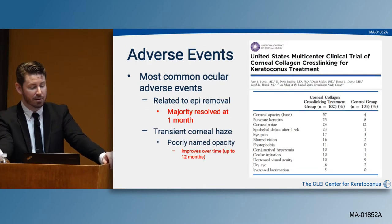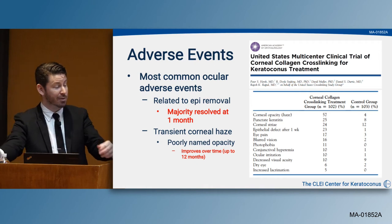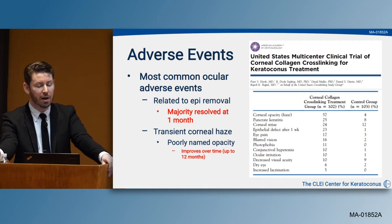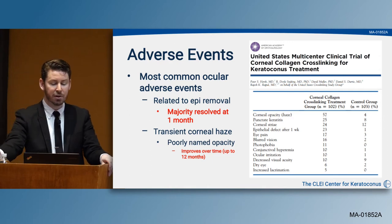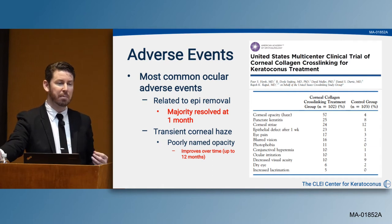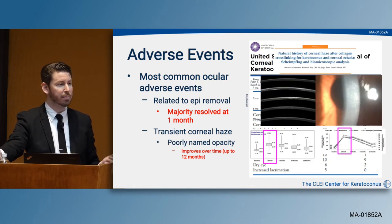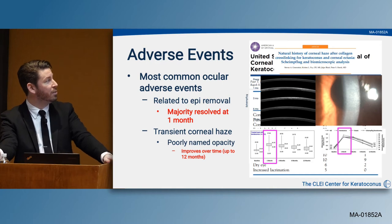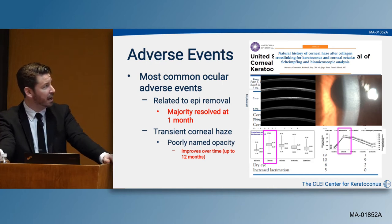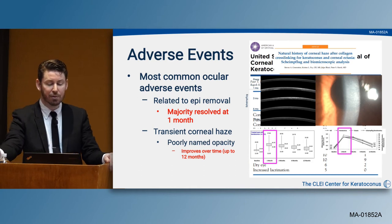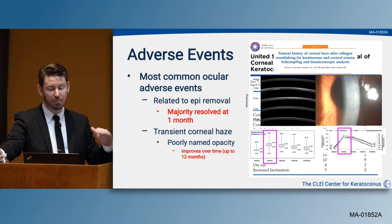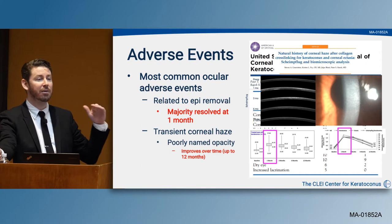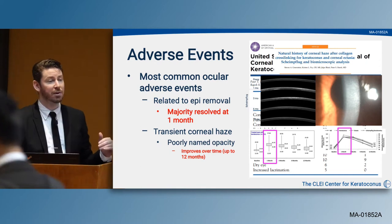In the study, the most common adverse events were related to epithelial removal, most of which resolved within the first month. There was transient corneal haze—a poorly named opacity—which resolves over time up to about the 12-month period, returning to about baseline. You can see the haze from pre-op through one-month, three-month, six-month, and 12-month, with significant reduction by six and 12 months.